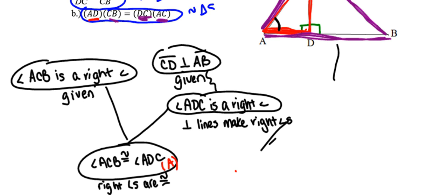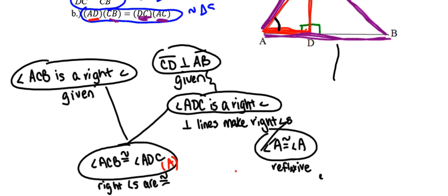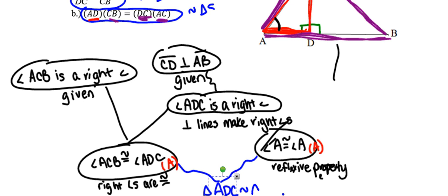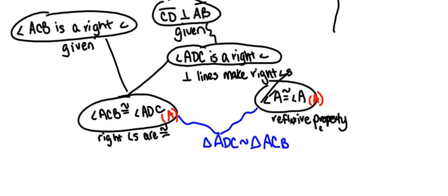The second pair is fairly simple to pull in: angle A is congruent to itself by the reflexive property. Now that I've got two pairs of congruent angles, I'm all set to say that those two triangles are similar. When I name them, I have to be very careful to get their corresponding parts lined up. So I'm going to call the first one triangle ADC. The angle in the purple triangle that corresponds to angle A is also angle A; the right angle at D matches up with the right angle at C in the big purple triangle, leaving the last angle at B. Those two triangles are similar due to angle-angle similarity.